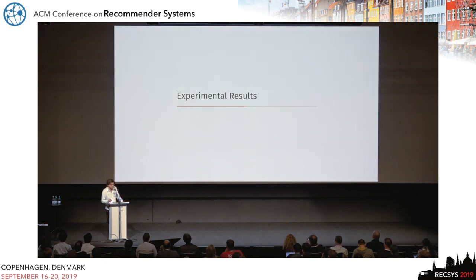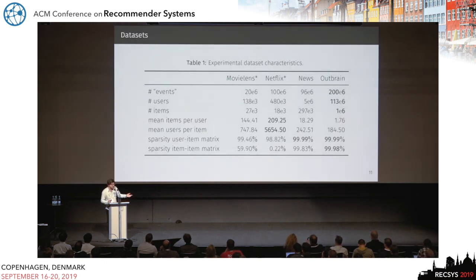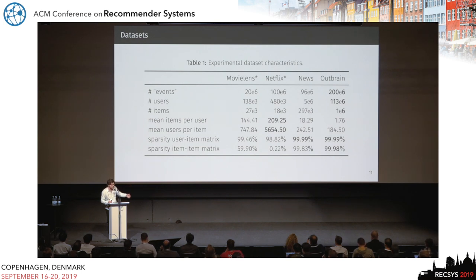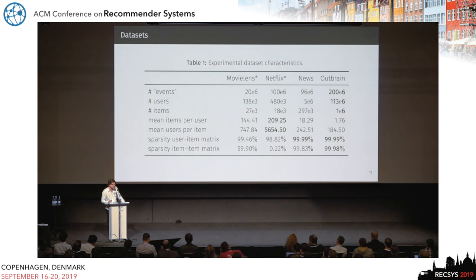For the experimental results, we used MovieLens, Netflix, a news dataset, and a subset of a reading dataset. MovieLens and Netflix are, of course, rating datasets; the reading dataset would be binary. They are all pretty big, ranging from 20 million to 200 million events or page views, with a large number of users and items. They are all pretty sparse, and you can see wide ranges in, for example, the mean length of user histories.